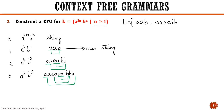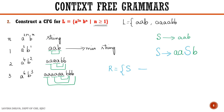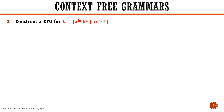One rule is written for the minimum string: S tends to aab. Then we write a recursive rule — for every pair of a's which occur one b has to occur, and to call this recursively we use variable S. So S tends to aaSb is our recursive rule. There are two rules for this language: S → aaSb or S → aab.